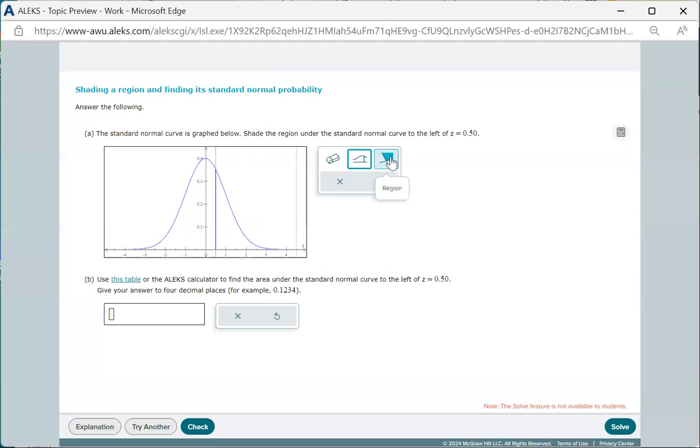Next, we use the region tool to shade the region. We left-click the region tool, position our cursor inside the region to shade, left-click again to shade that region.